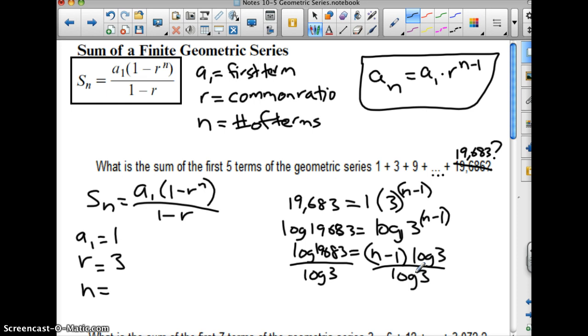And that equals the log of 19,683. So then to solve, I'm going to divide both sides by log of 3. Now we're cooking. You do that, and that comes out to 9. This better come out to an integer, that's why this number had to be changed. It needs to come out to an integer because it is going to be a term. Add 1 to both sides and I get n equals 10.